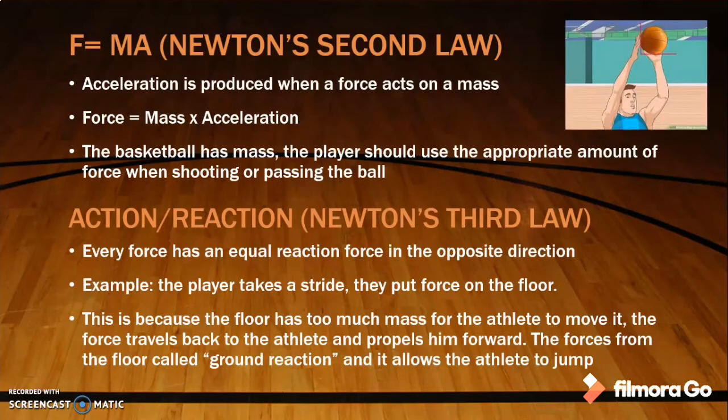F = ma is Newton's second law. Acceleration is produced when a force acts on a mass. The equation is expressed as force equals mass times acceleration. The basketball has mass, so the player should use the appropriate amount of force when shooting or passing the ball.